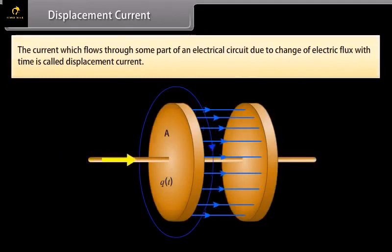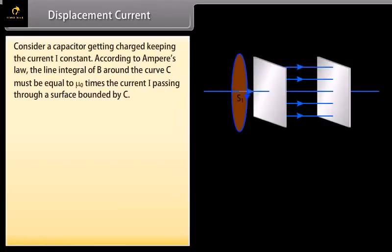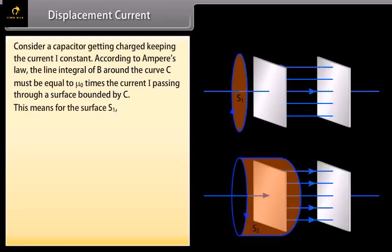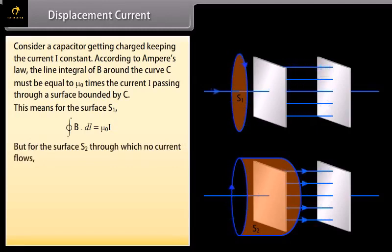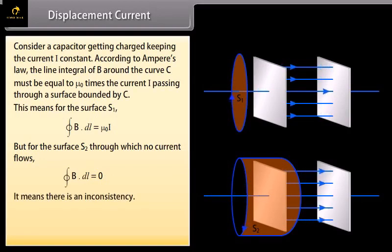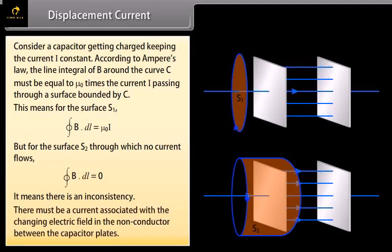Displacement current. Consider a capacitor getting charged, keeping the current I constant according to Ampere's law. The line integral of B around the curve C must be equal to mu naught times the current I passing through a surface bounded by C. This means for the surface S1, close integral of B dot DL is equal to mu naught I. But for the surface S2, through which no current flows, close integral of B dot DL is equal to 0. It means there is an inconsistency.